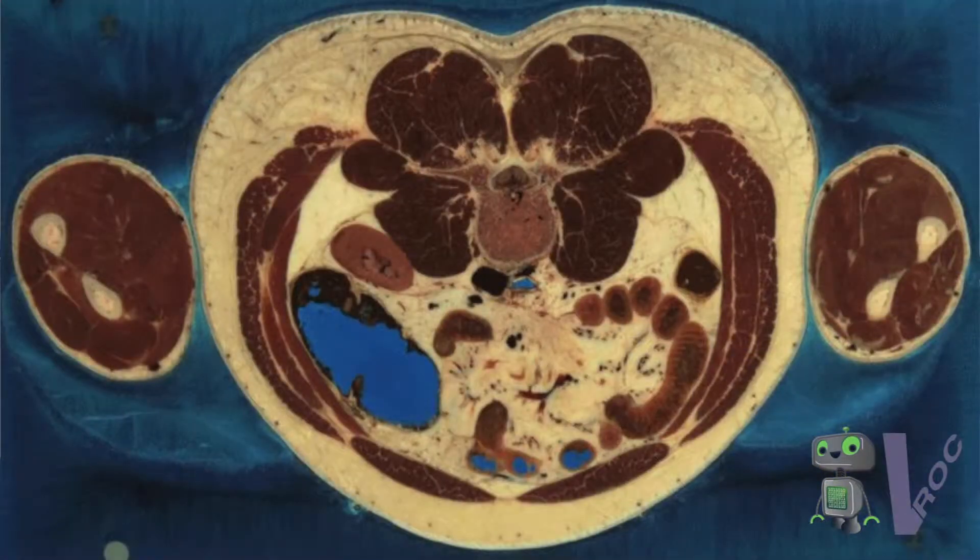He died by lethal injection. They took his body, did a bunch of different types of scans, and also froze him in a big block of ice. Then they cut him with a meat slicer, one millimeter at a time, and took photographs.